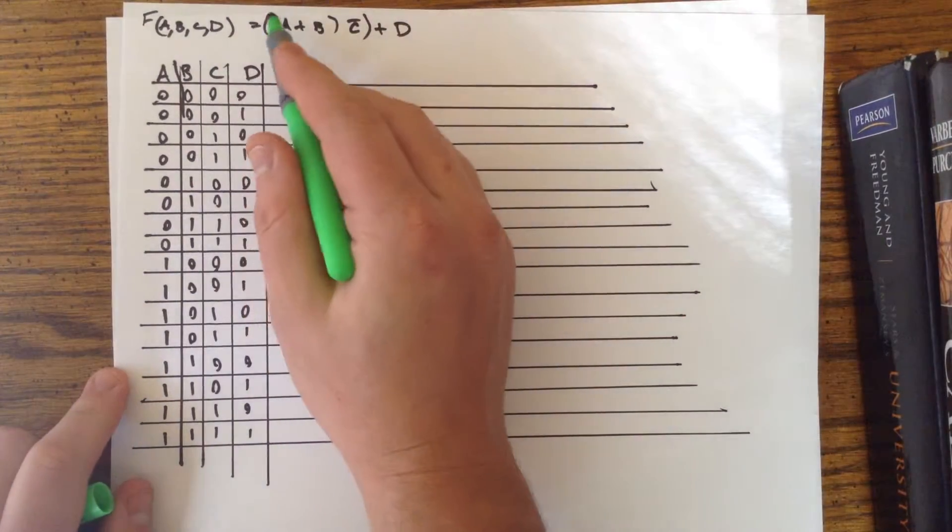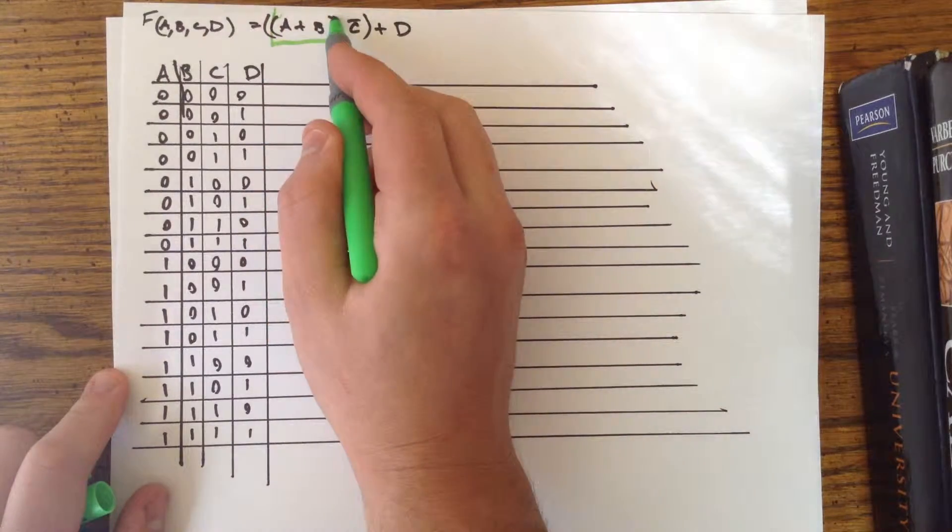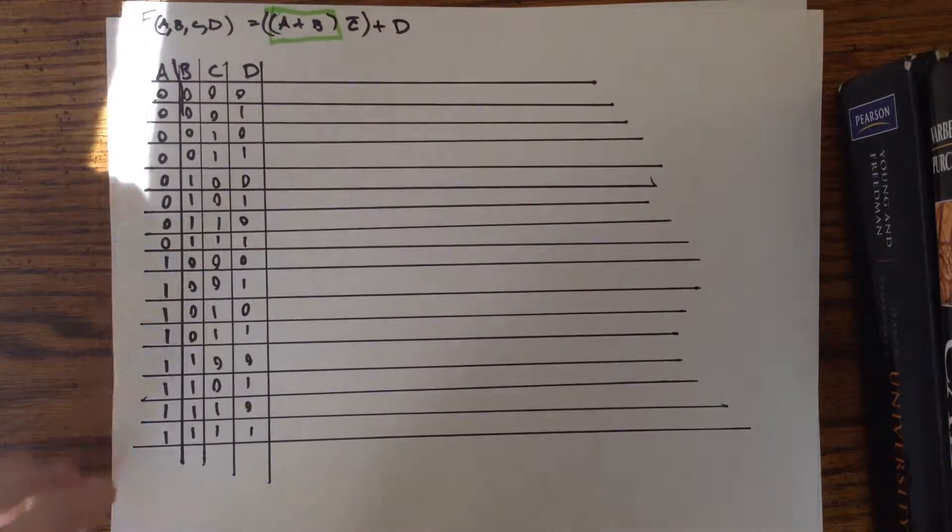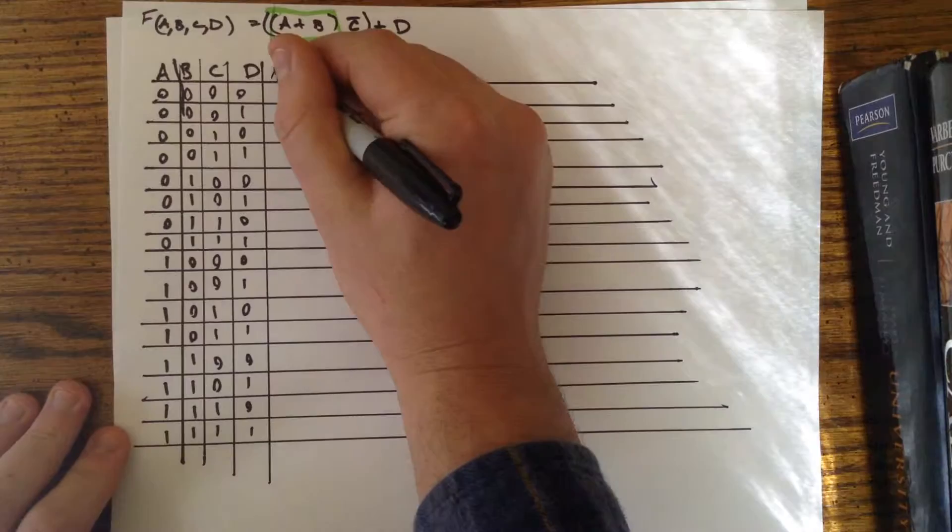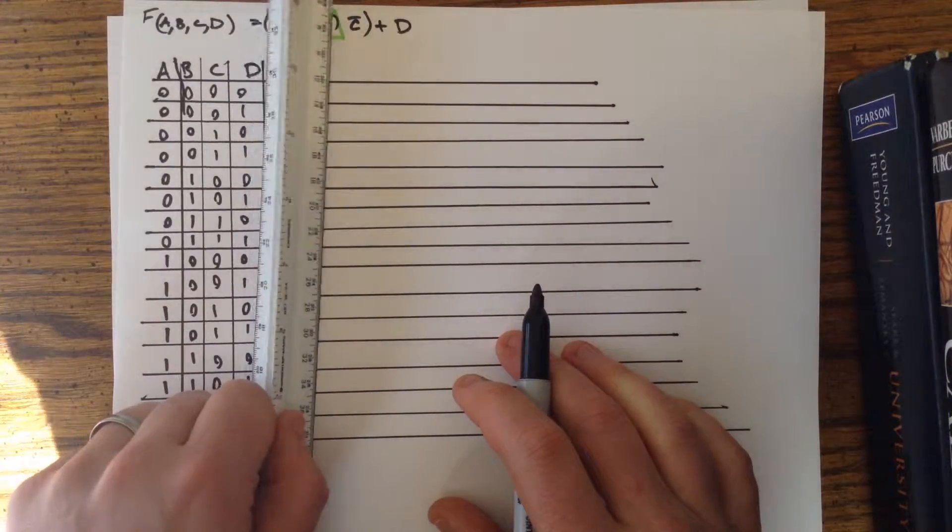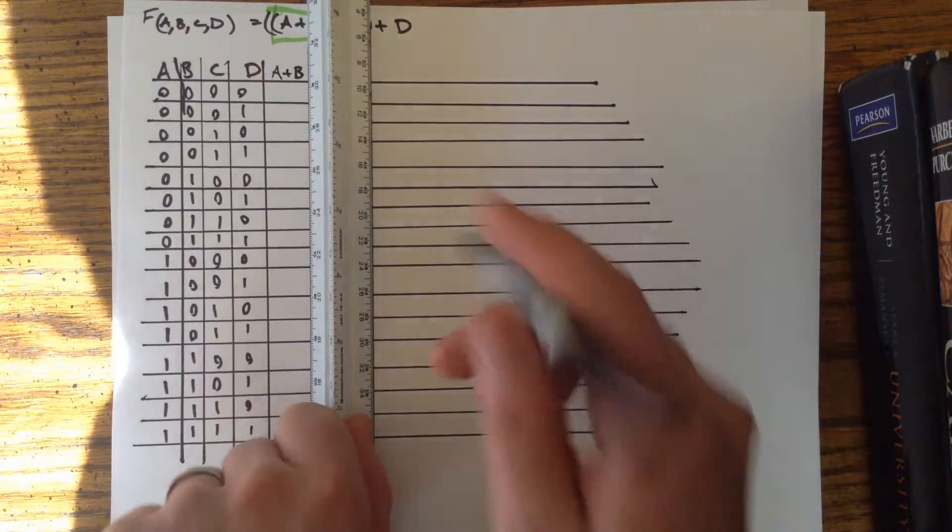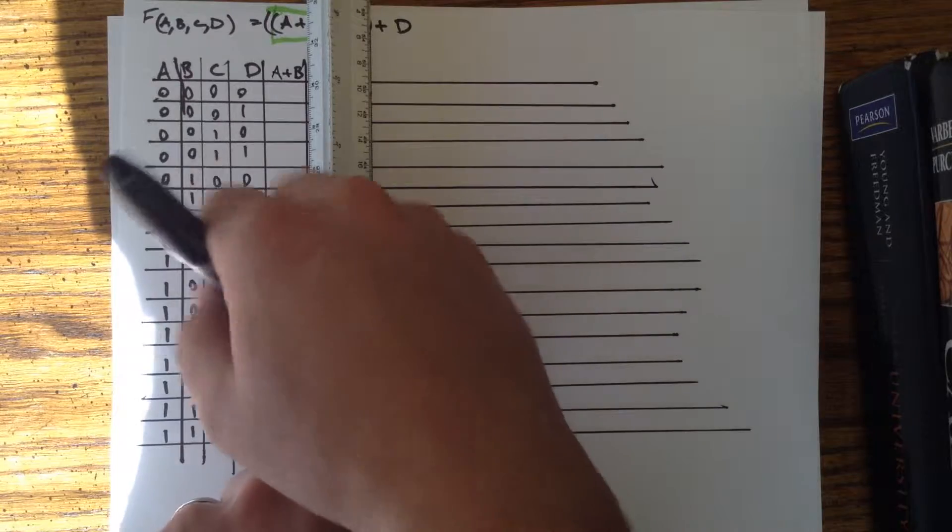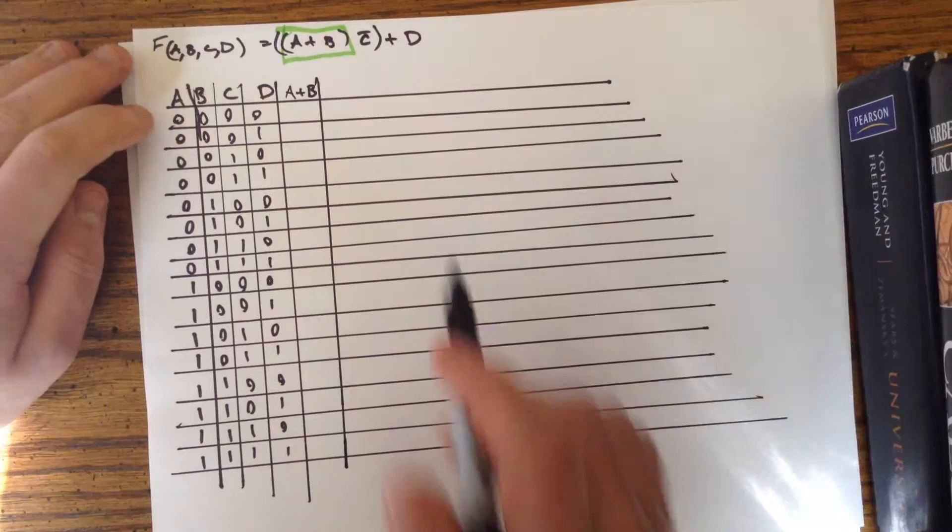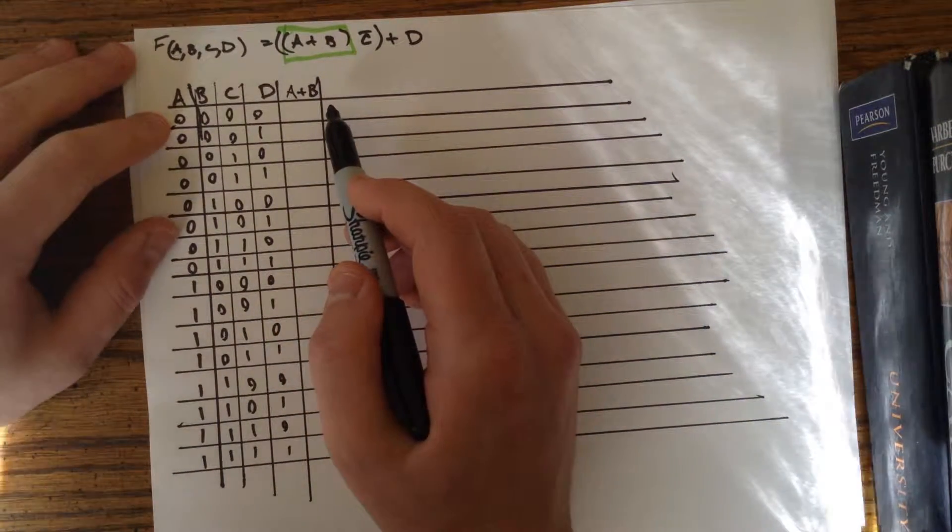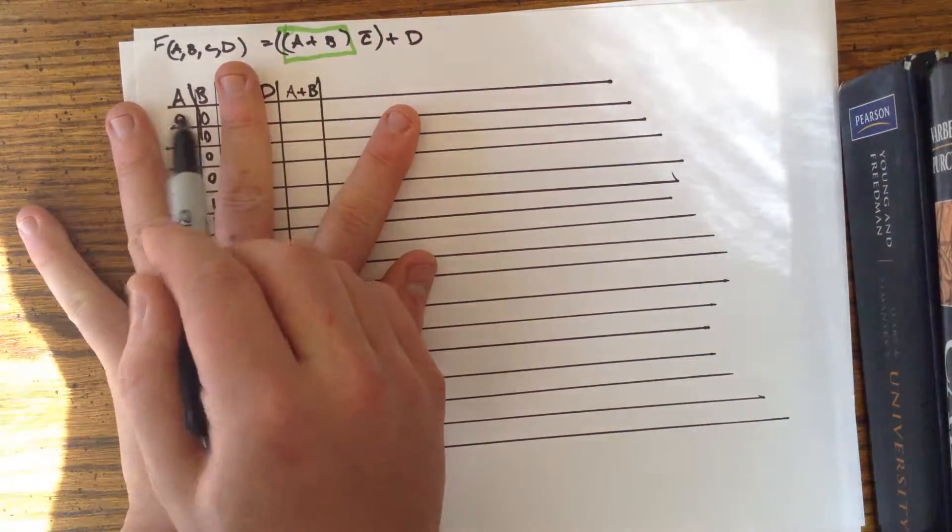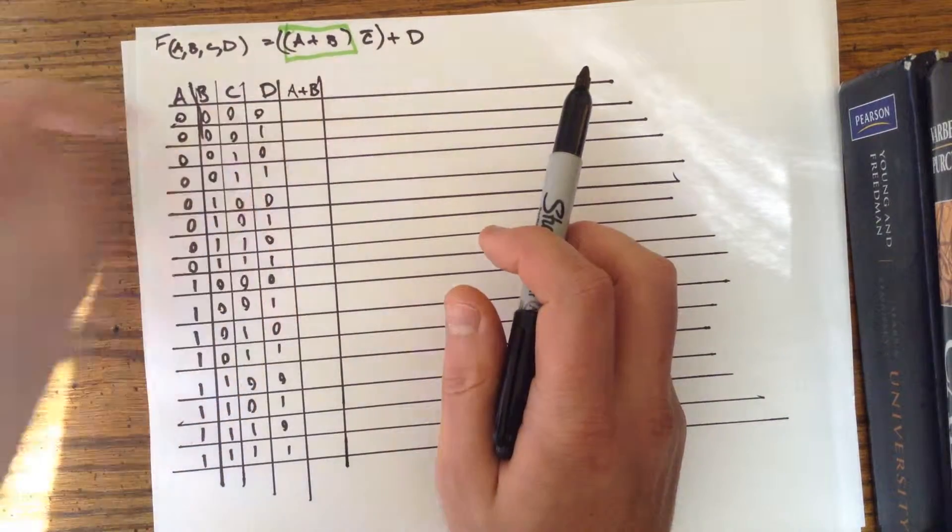So what I like to do is divide and conquer. That's my engineering mantra - divide and conquer. What I'm going to do is start on the inside of all the parentheses. I'm going to take this part right here, A plus B, and make a subcolumn that says A plus B. I'm going to go ahead, keep everything neat, and just draw a line there. Now what we're doing is this is an A or B, so we just cover up these two columns and look at A and B, because we don't care what C and D are for just this little operator.